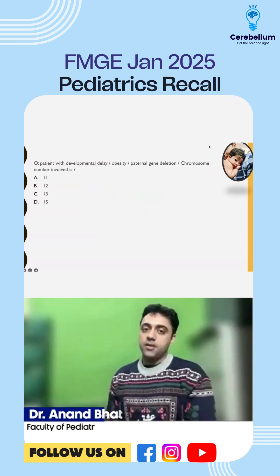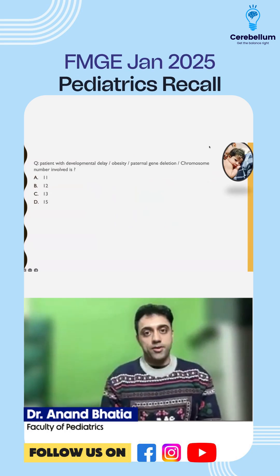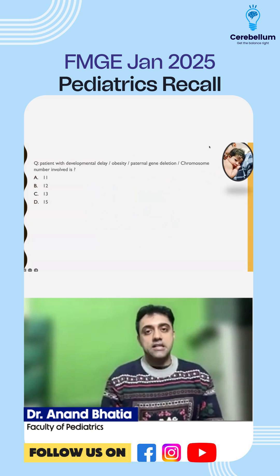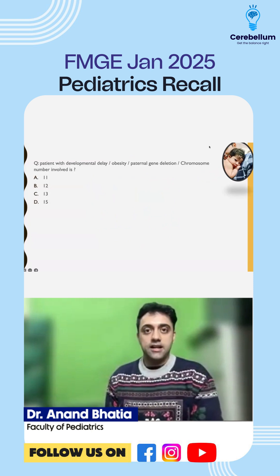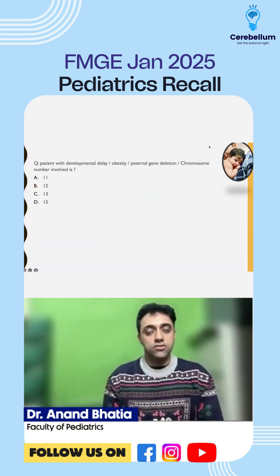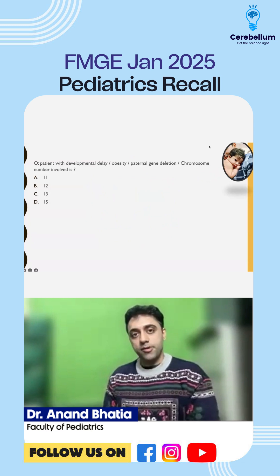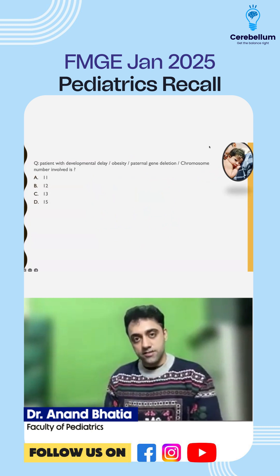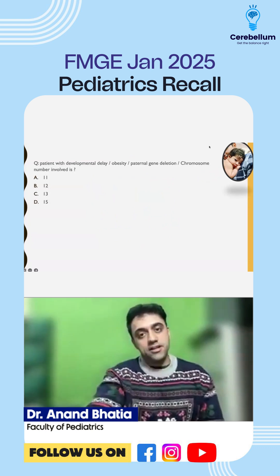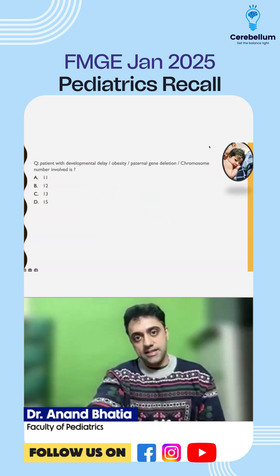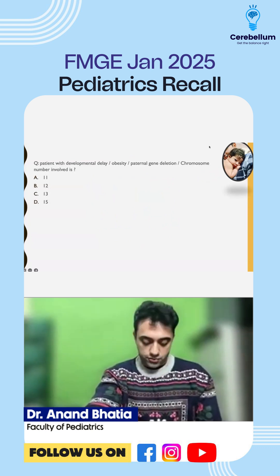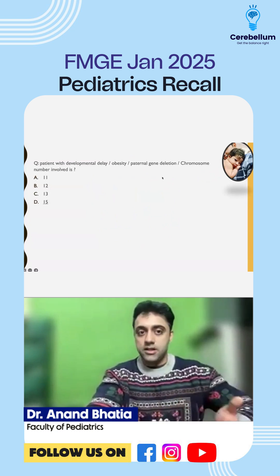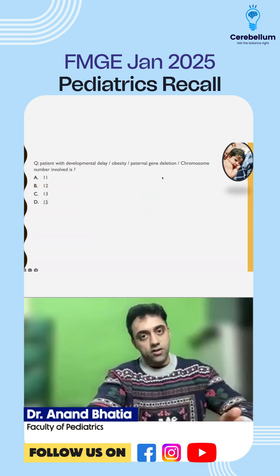A repeated patient with developmental delay, obesity, and paternal gene deleted. As we had done in our classes, one of the examples for uniparental disomy is Angelman syndrome, Prader-Willi syndrome, and Russell-Silver syndrome. Developmental delay, obesity, and paternal gene deleted — one junior asked which chromosome is involved: chromosome number 15 is involved in this question.